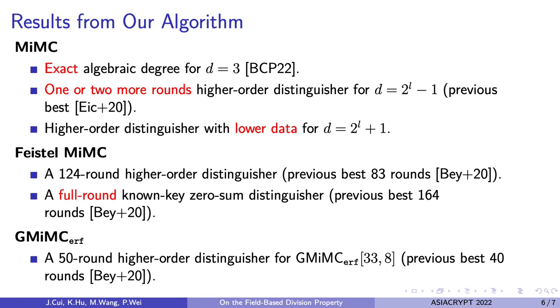For GMiMC, we search for a 50-round higher-order distinguisher for the instance with block size 33 and 8 branches. This is a short summarization of our paper, and thank you for listening.